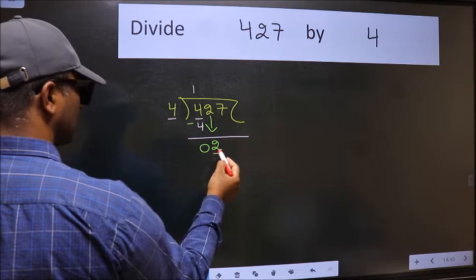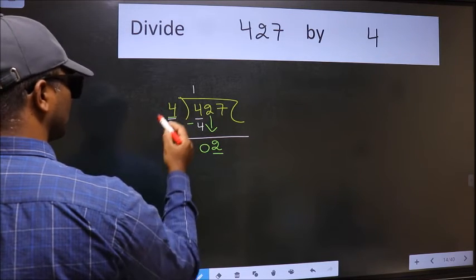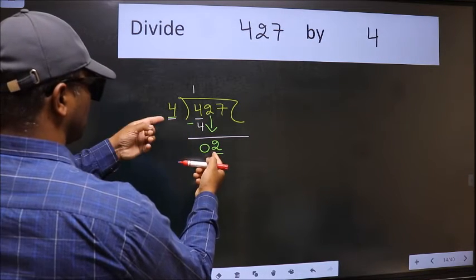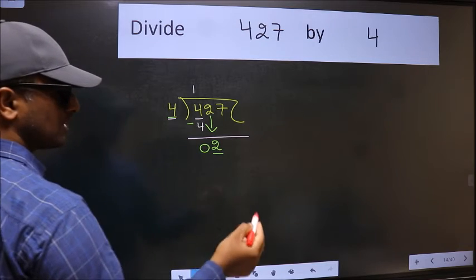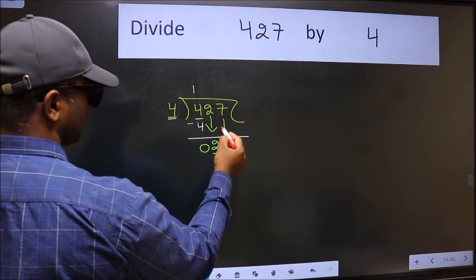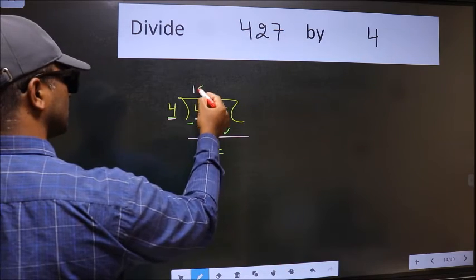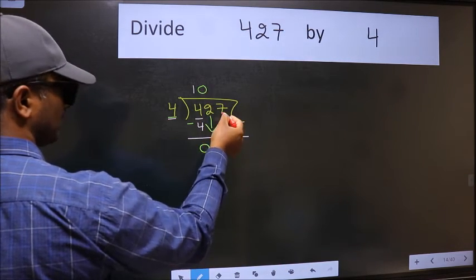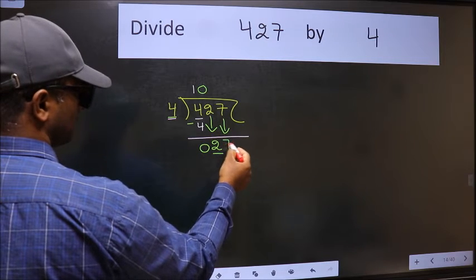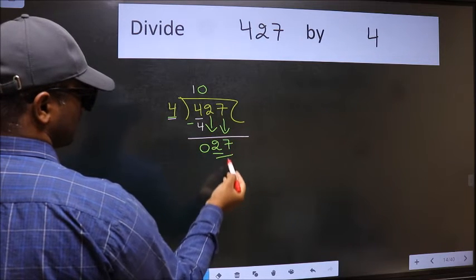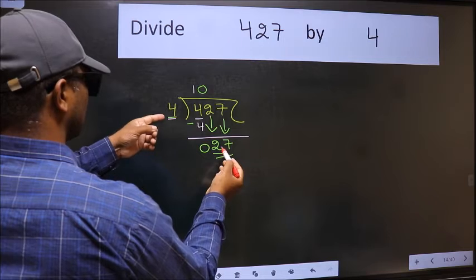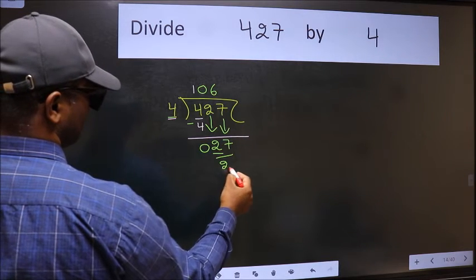Now here we have two and here four. Two is smaller than four, so we should bring down the second number. And the rule to bring down second number is we should put zero here, then only we can bring this number down. Now 27, a number close to 27 in 4 table is 4 6 24.